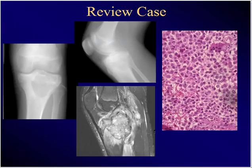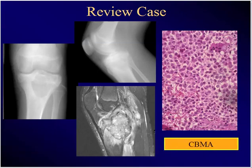Proximal tibial lesion, painful, been there with pain for two years, seen multiple doctors. This MR shows this lesion, and here's the pathognomonic histopath. What's the diagnosis? Chondroblastoma. Big chondroblastoma.